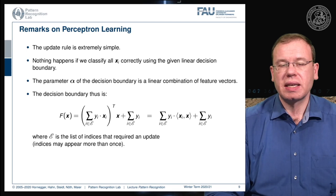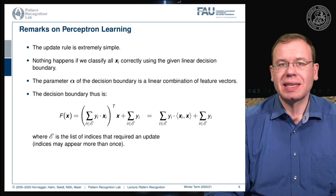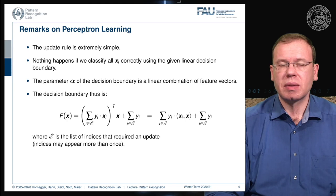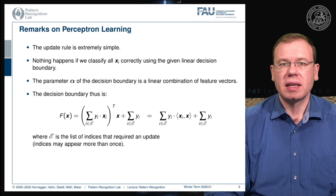We define a set E as the list of all indices that required an update, essentially storing the entire training process. Some indices may appear more than once. The entire decision boundary can then be written as a linear combination of all training observations — a concept that will reappear when we talk about support vector machines, which solve this problem much more elegantly.